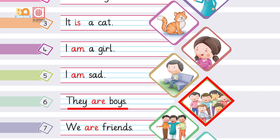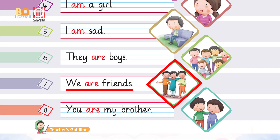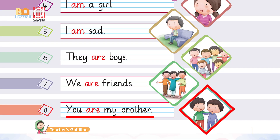They are boys. Why have we used the word 'are' here? Because 'they' and 'boys' both are pointing towards plural. We are friends. You are my brother.